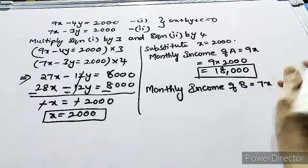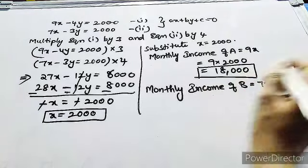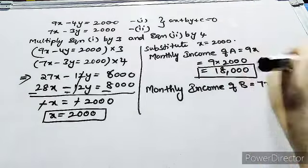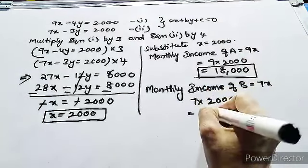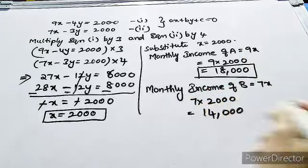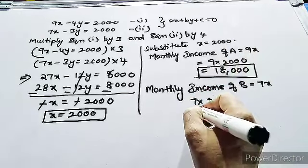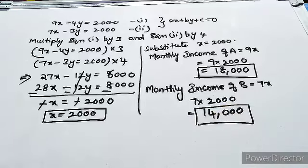So what is the monthly income? We are considering income as x, so we are writing 7x. Substitute your x value. What is your x? 7 into 2000 is 14000. So monthly income of A is 18000, monthly income of B is 14000.